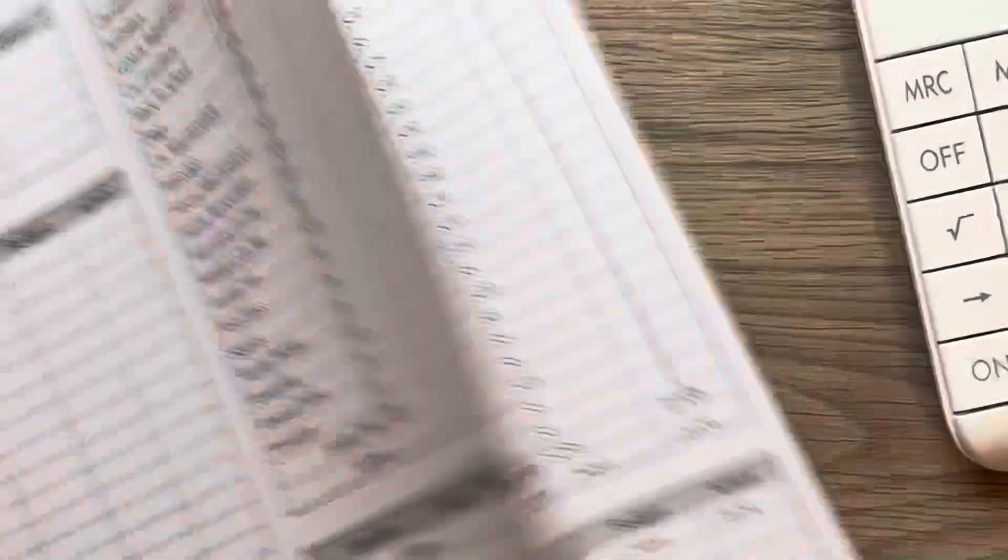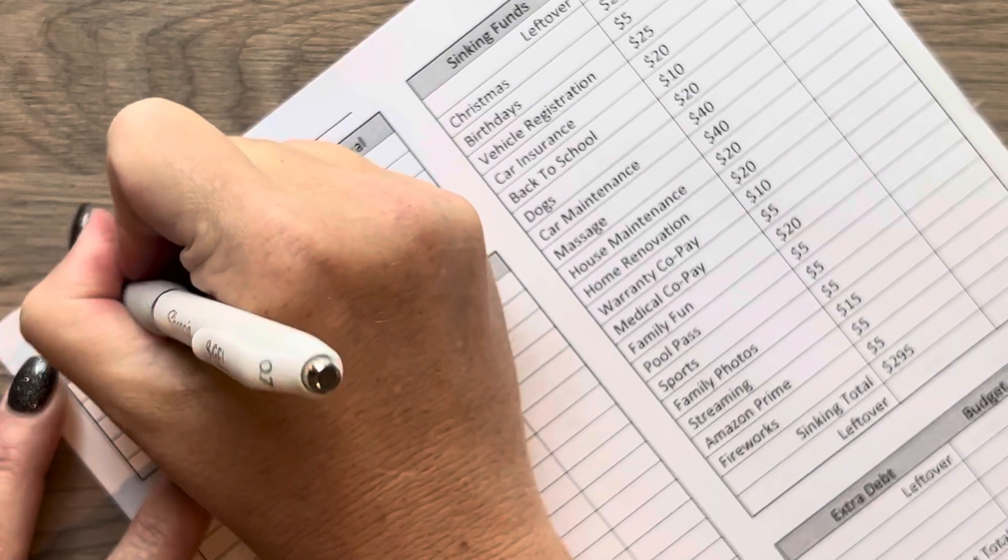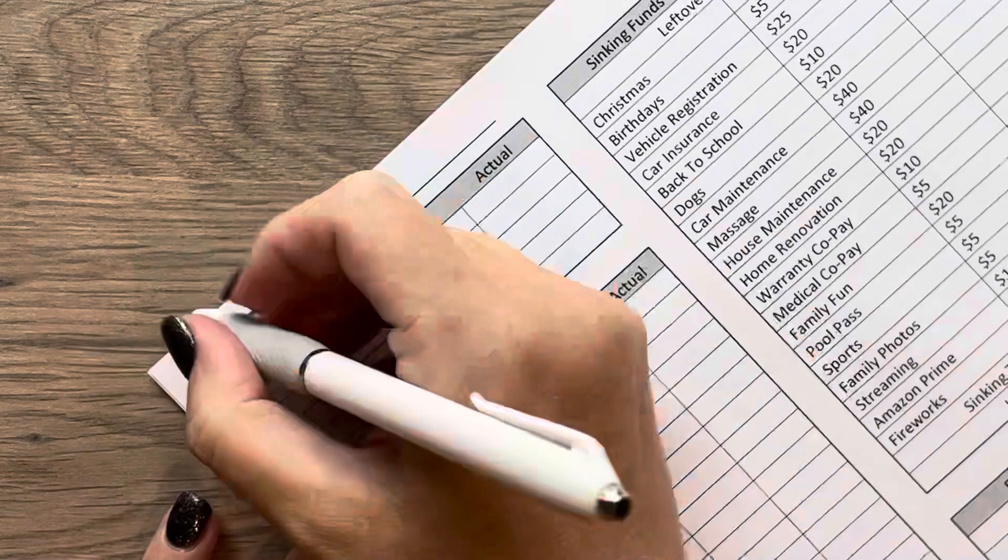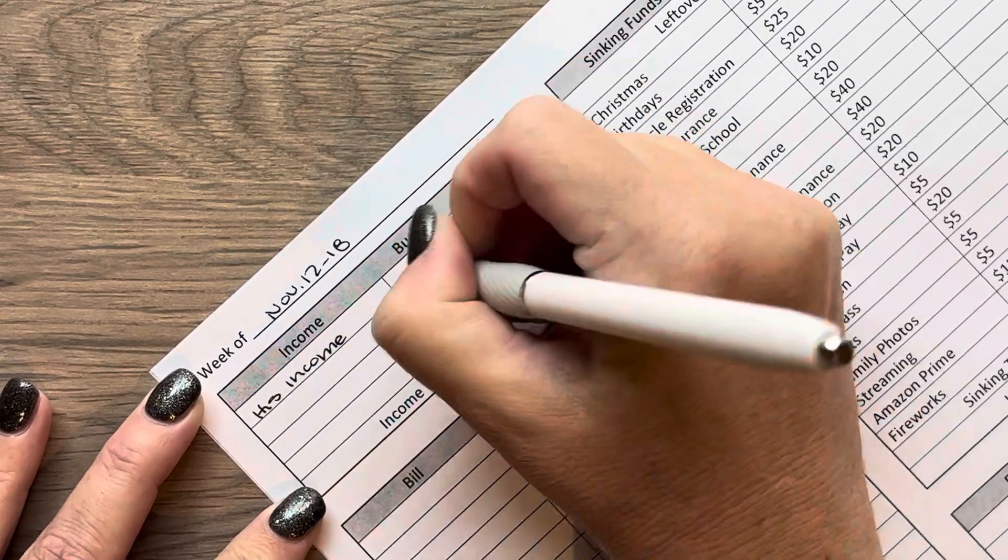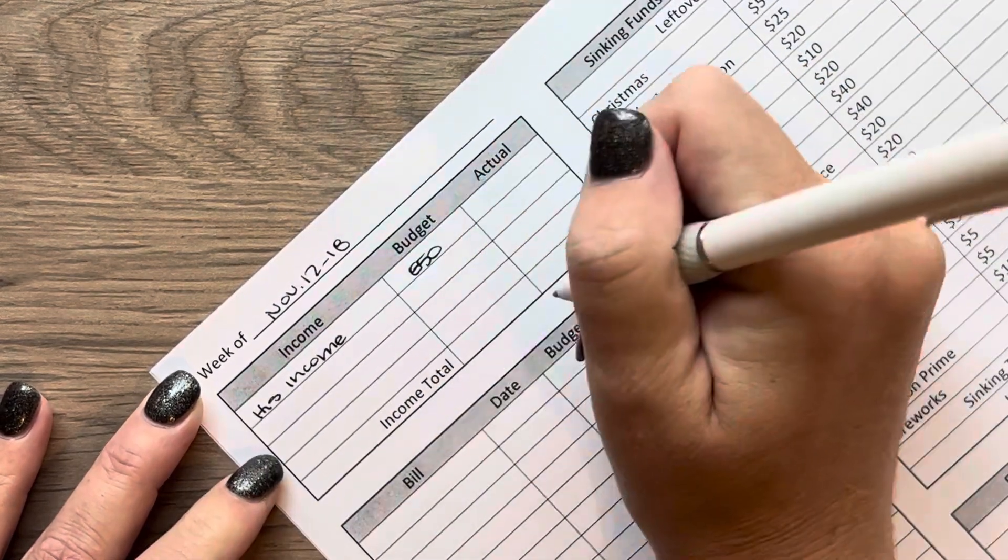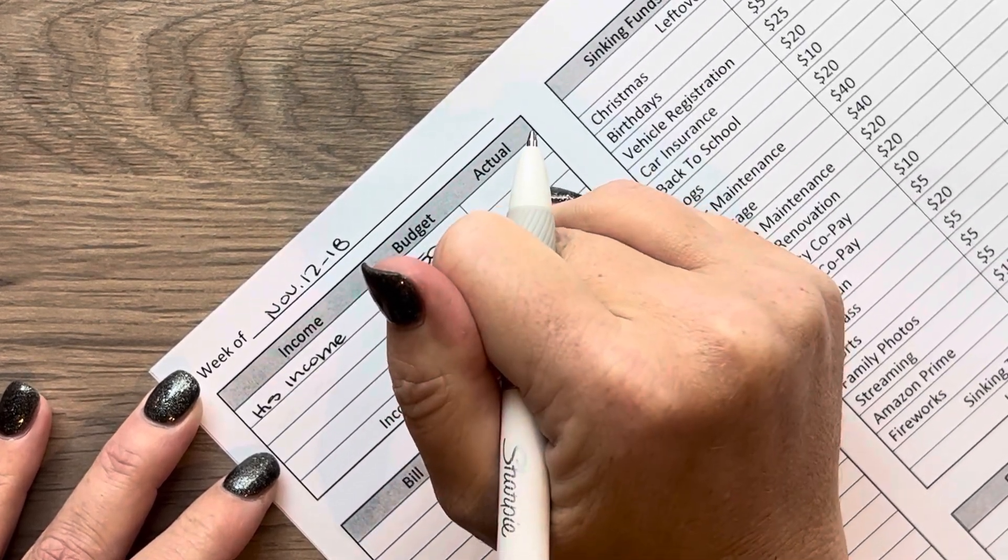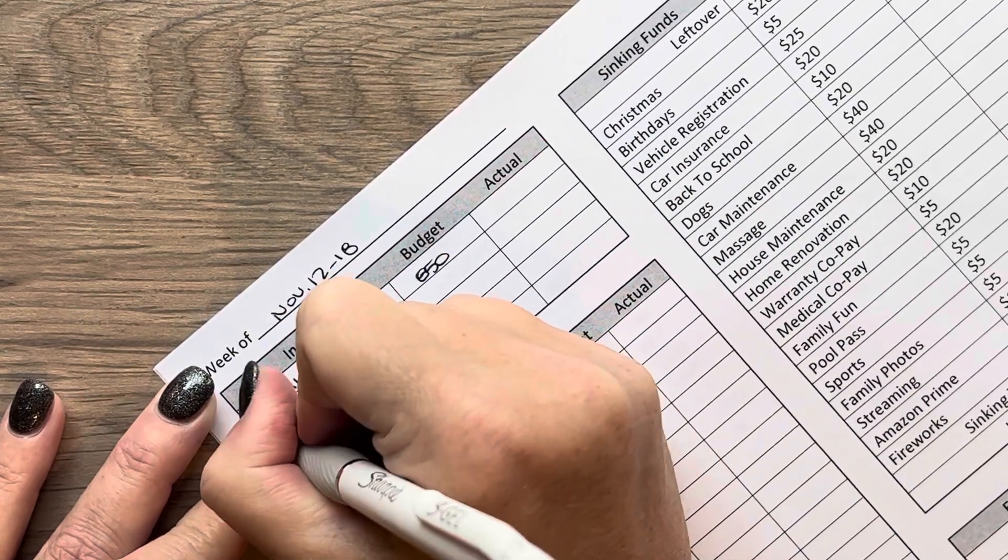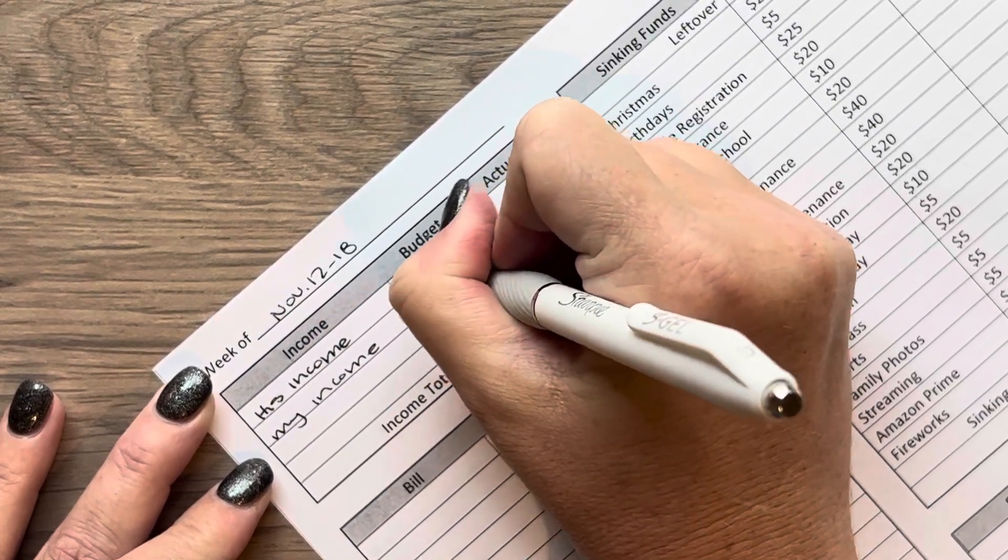So starting for this week, this is the week of November 12th through the 18th. So my husband gets paid, which was $850. He did get overtime, but I will not be adding that into this income. The reason why is because we were putting that aside for our debt snowball. But then I get paid $1566. I get paid twice a month.